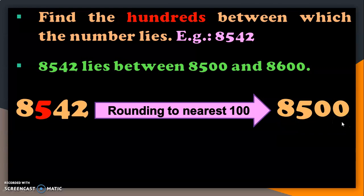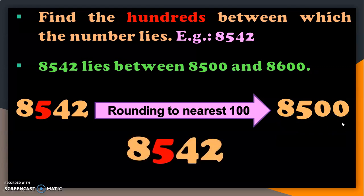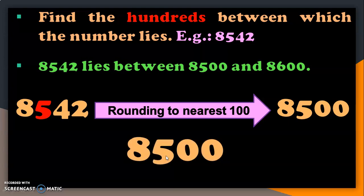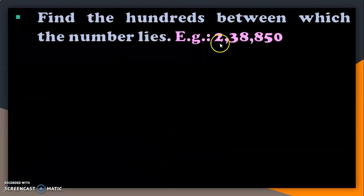Using the second method for rounding to the nearest hundred: identify the target digit in the hundreds place, which is 5. Make all digits to the right of the target digit 0. Since the digit immediately to the right is 4, which is less than 5, we do not add anything to the target digit. So the answer is 8,500.